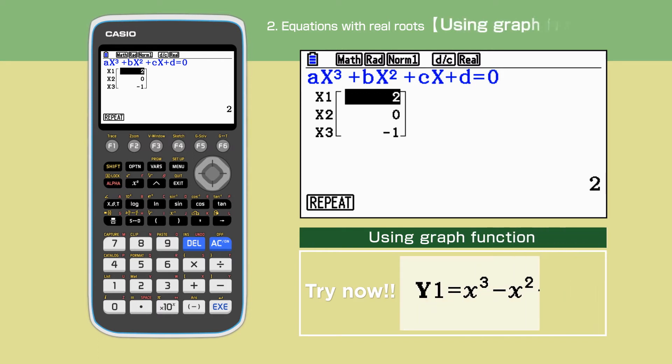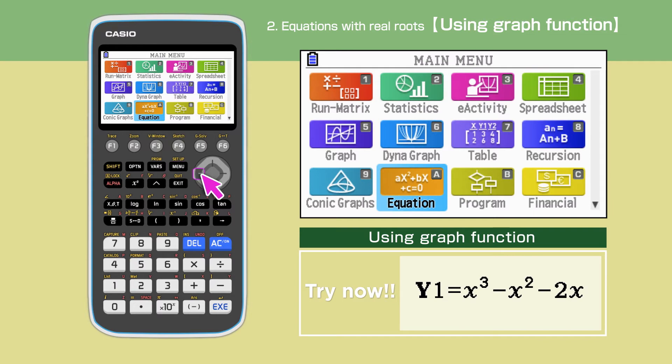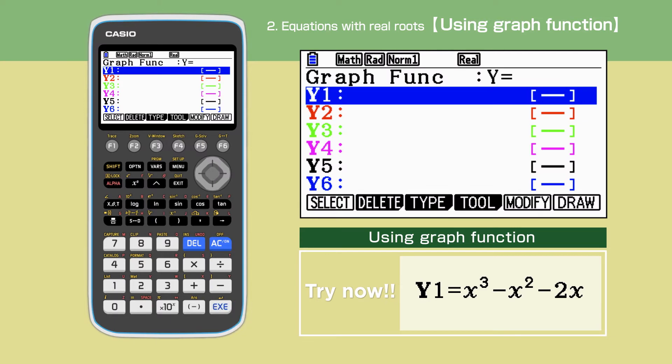Next, we are to solve the same equation graphically. Press the menu button to open the main menu, then select the graph function. Check that the graph function shows y equals, then enter the cubic function y equals x cubed minus x squared minus 2x. x needs to be entered using the x, theta, t key.